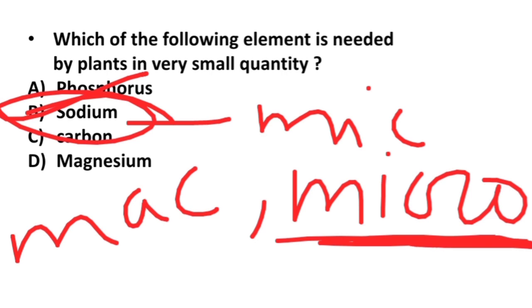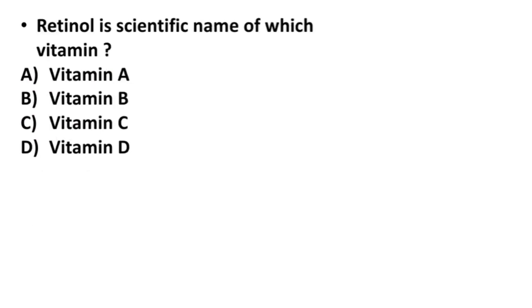Now next, retinol is the scientific name of which vitamin? Vitamin A, vitamin B, vitamin C, or vitamin D? Its correct answer is option A. Vitamin A's scientific name is retinol.